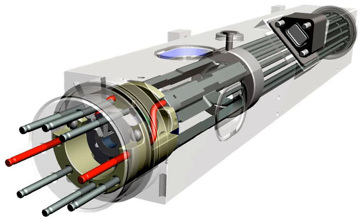The Deep Space Atomic Clock is a miniaturized, ultra-precise mercury-ion atomic clock for precise radio navigation in deep space.